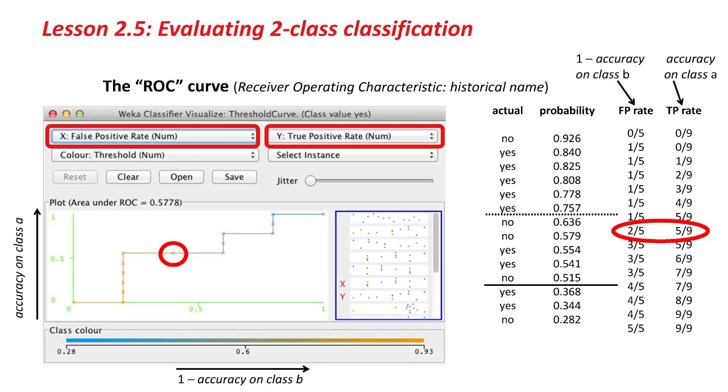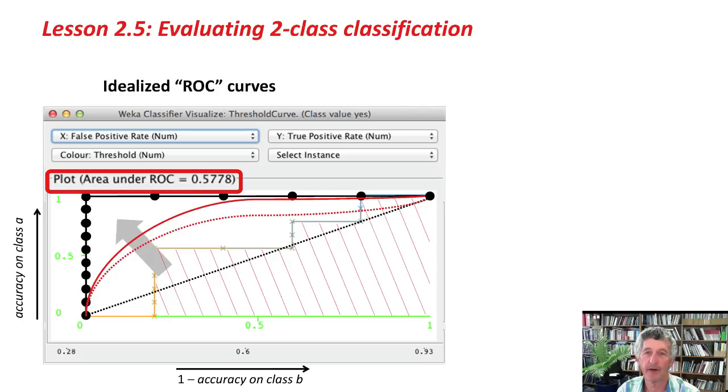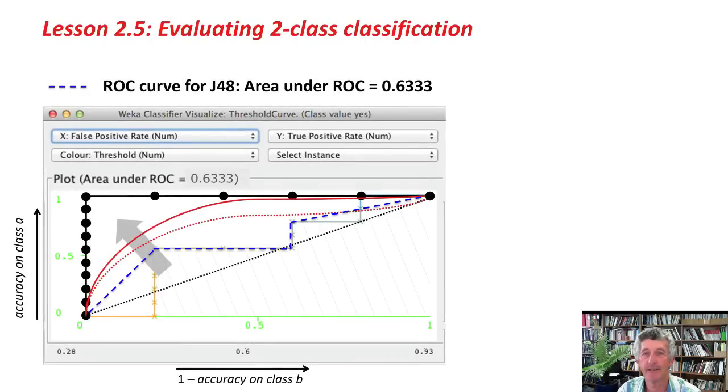What we want to measure is the area under the curve. It's called a ROC, Receiver Operating Characteristic Curve, for historical reasons. Weka prints out the area under the ROC curve. In this case, it's 0.5778. If we could find a classifier that pushed a bit more up towards the top left, then that would be better. It would give us a better area. Actually, if we were to evaluate J48, which I won't do, but it's very simple, the same data set. Just run J48, look at the curve. You'll get a curve like this, the dashed blue line, which is better. The area under that curve is 0.63, better than Naive Bayes.